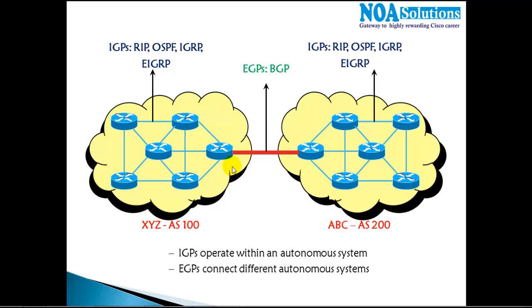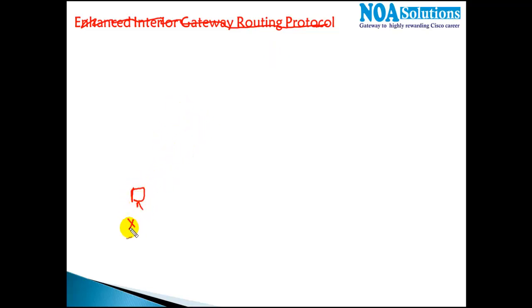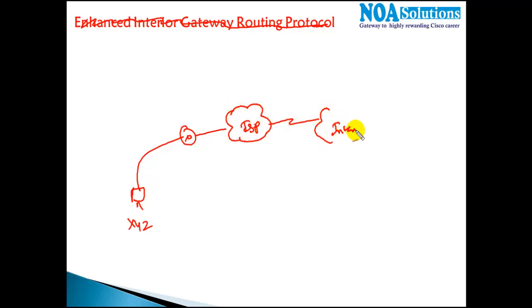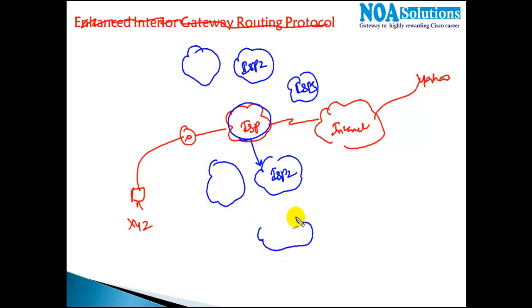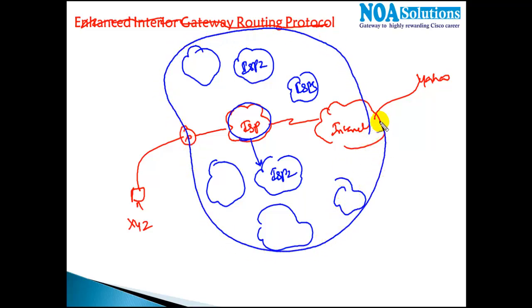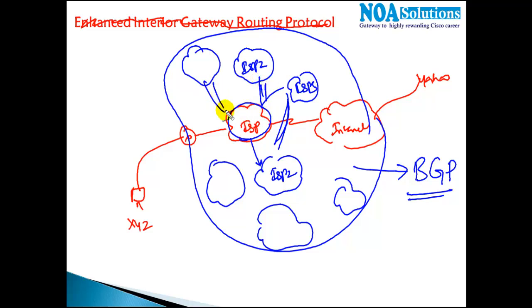For example, when you're sitting in your company XYZ and connecting to the internet through an ISP to reach a Yahoo server, the service provider keeps track of each and every autonomous system — connecting to ISP 2, ISP 3, ISP 4, and all different organizations. It keeps track of all these different autonomous system numbers using the BGP protocol, enabling inter-autonomous system communication.